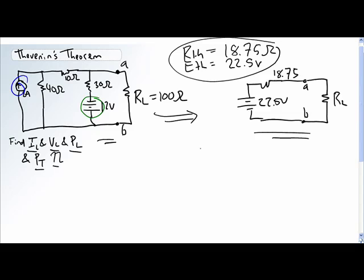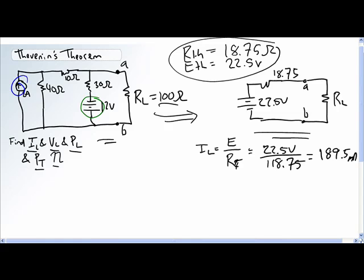So, what is IL? IL is equal to, well, since it's a series load, it's going to be equal to the applied voltage divided by the total resistance. In this case, it's 22.5 volts divided by 118.75. That's 22.5 divided by 118.75. Our total current going through our load resistor is 189.5 milliamps.